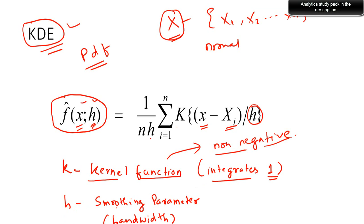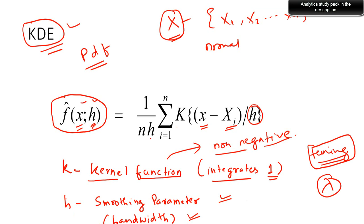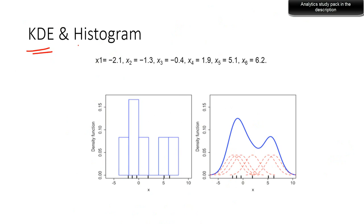H is known as the smoothing parameter and is also called bandwidth. The smoothing parameter determines the smoothness of the curve. People familiar with machine learning models will recognize tuning parameters or smoothing parameters — lambda for example. H will determine the smoothness of your PDF — how smooth it is. We'll see an example to understand that.